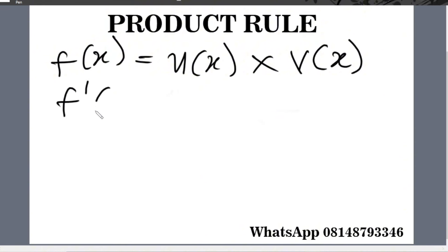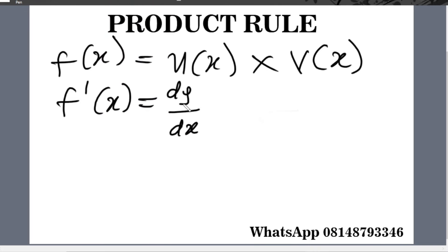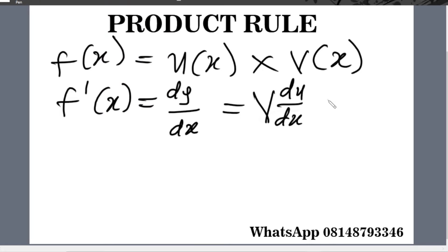So f prime of x equals dy over dx. If you've watched our first video on the introduction to differentiation, you should understand how we got this. So dy over dx equals v du/dx plus u dv/dx. This is the formula for product rule differentiation.